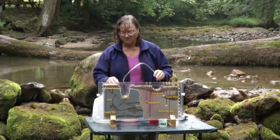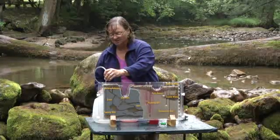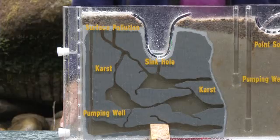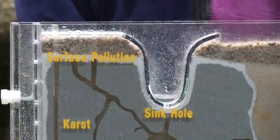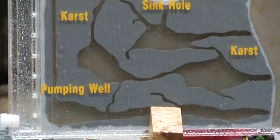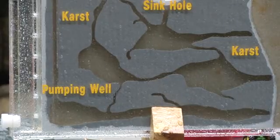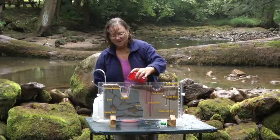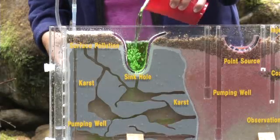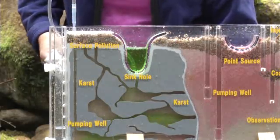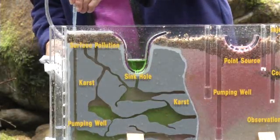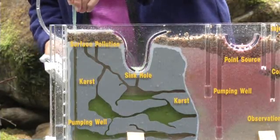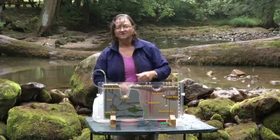Now I'm going to switch over to the karst model side. You can see there are big open pipes, called conduits, in the rock on the karst side of our model. I'm going to put pollution into our sinkhole — this is showing what a natural sinkhole is like — and watch how fast that pollution gets all the way down to where your well is at the bottom of this karst system.